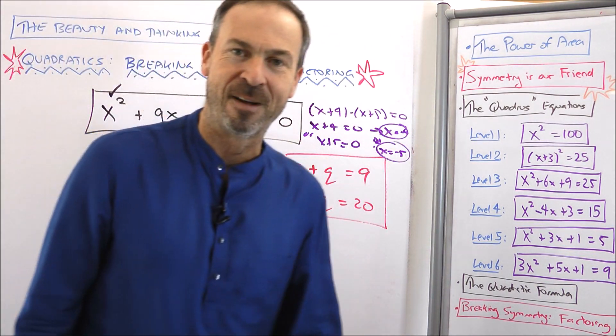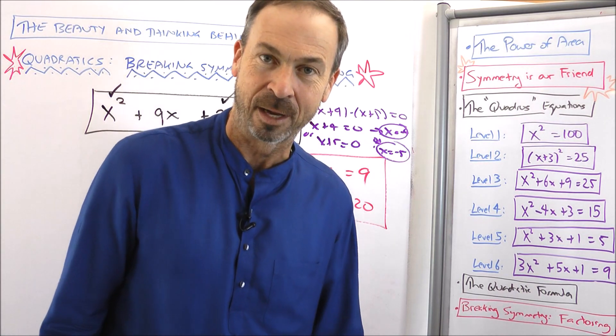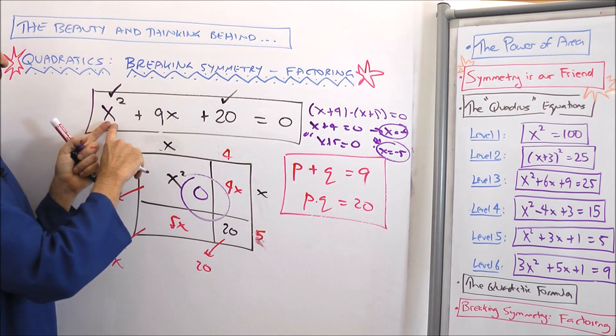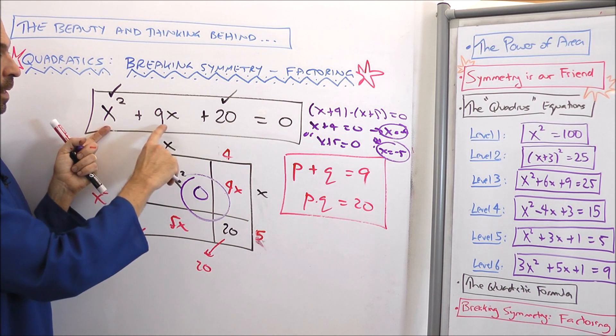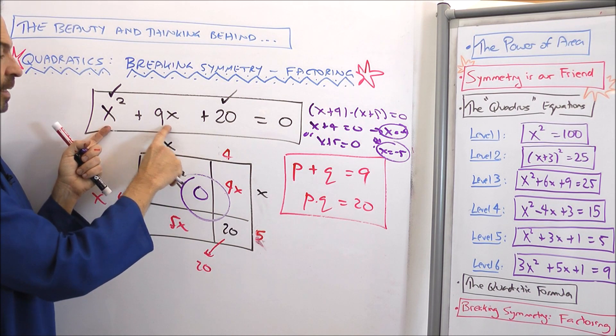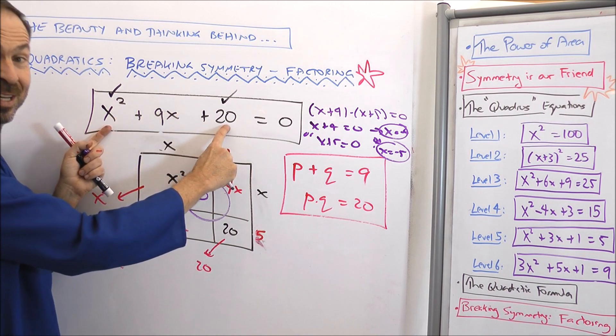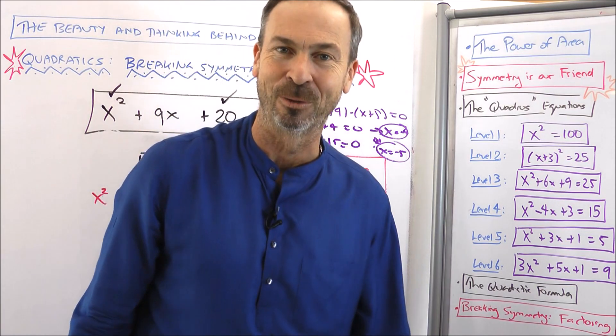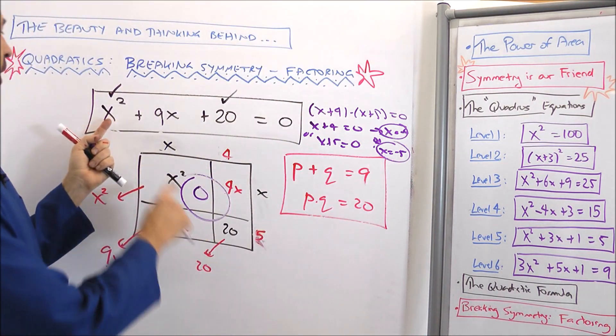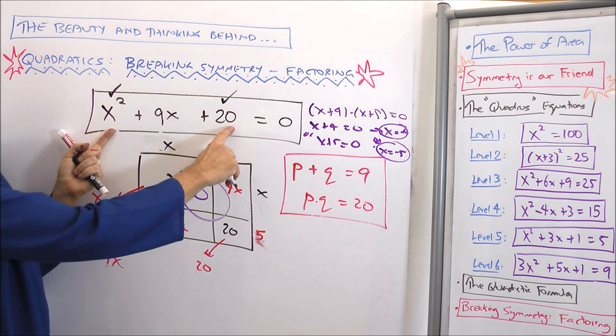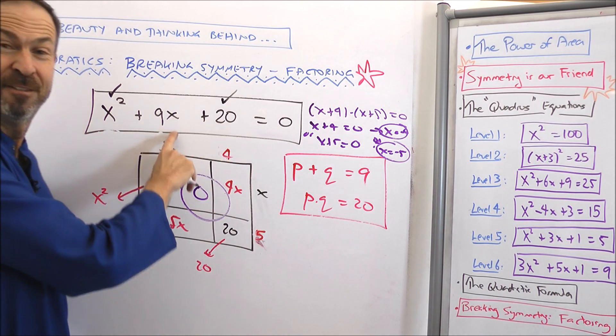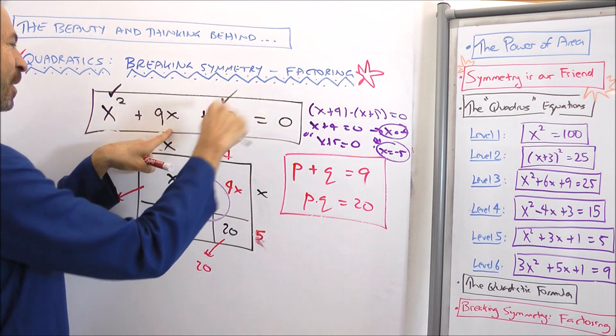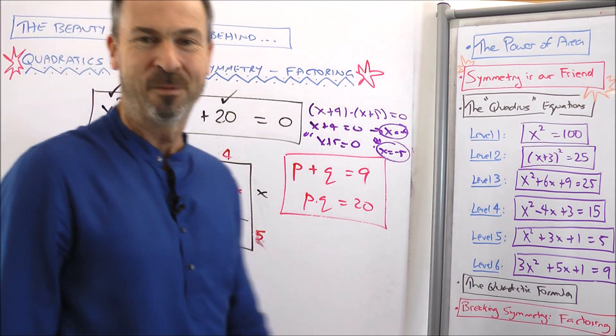x equals negative 4, x equals negative 5 should be the solutions to this quadratic equation. Well, let's check. I'll just check it. x equals negative 4. Negative 4 squared, 16. 9 times negative 4, negative 36. So 16 and 20 is 36. Take away 36 is 0. Bingo. Negative 4 is a solution. Negative 5. Negative 5 squared is 25 plus 20 makes 45. And then 9 times negative 5 is negative 45. 45, take away 45, 0. Bingo. We've got the solutions.